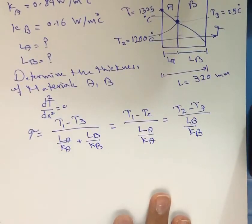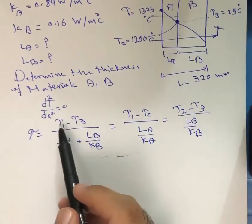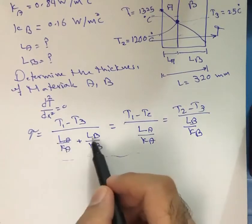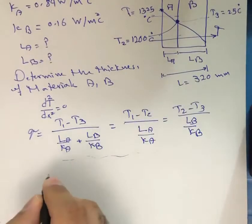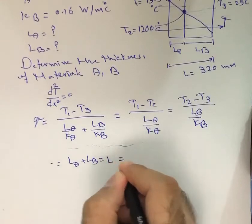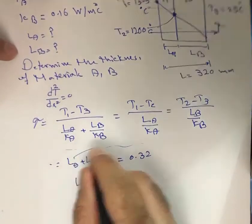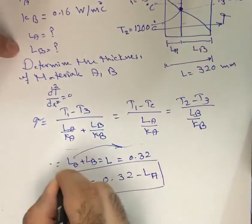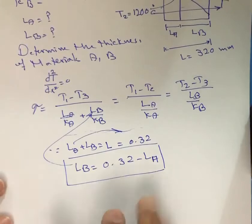We can use the first two terms since T1, T3, and T2 are known and thermal conductivities are known, but the lengths L_A and L_B are unknown. From the schematic diagram we can write L_A plus L_B equals L, which converting to meters is 0.32 meters. Therefore L_B equals 0.32 minus L_A. Substituting this reduces the number of unknown variables.